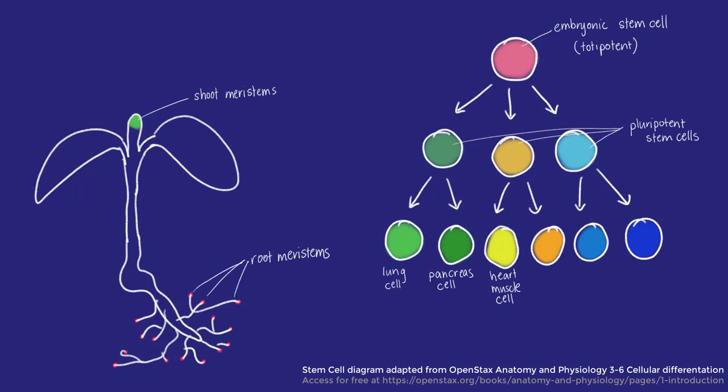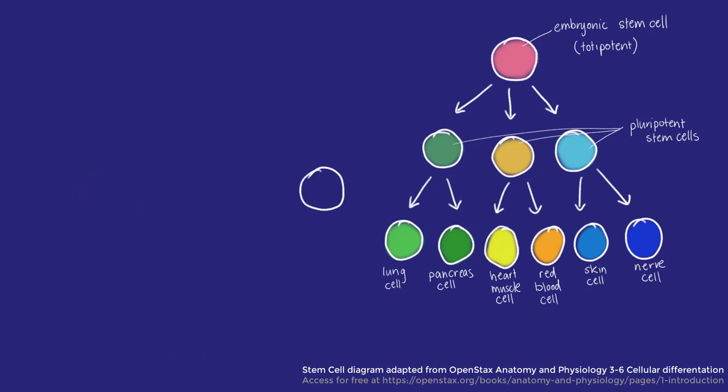Scientists are still working to understand how adult stem cells, for example the blood stem cells from bone marrow, can differentiate into different tissue types while in the body and when in a lab culture.